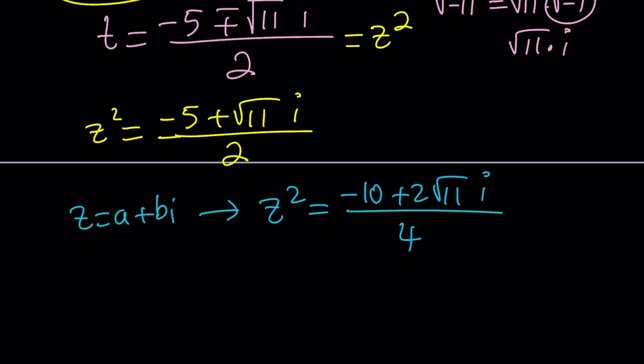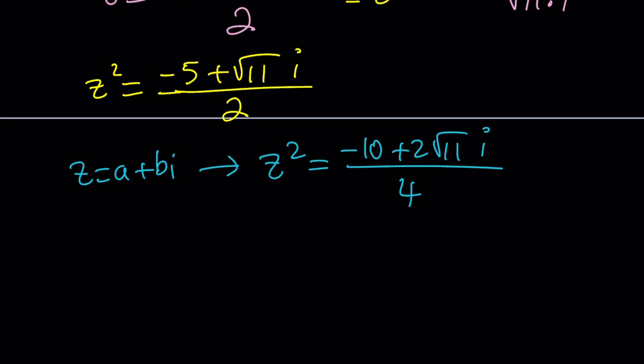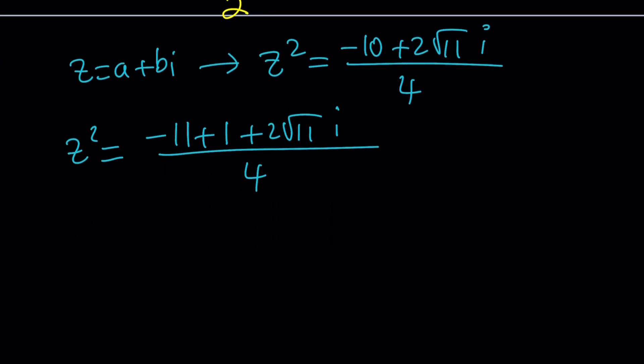By multiplying, you achieve two things. First, the denominator becomes a perfect square, which is nice. And the numerator is actually factorable. We can write it as a perfect square. Negative 10 and the presence of square root of 11 tells me I can write negative 10 as negative 11 plus 1, and this can be turned into a perfect square.